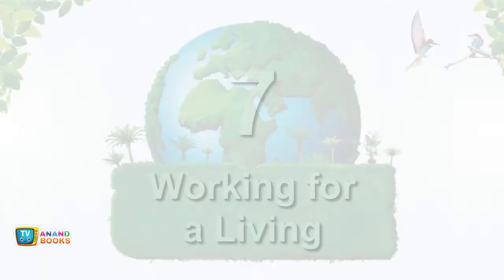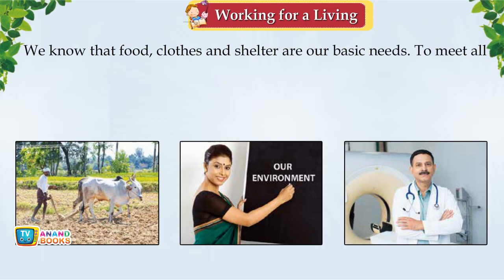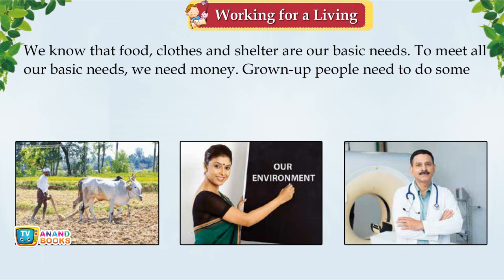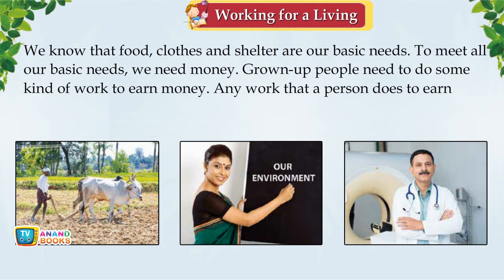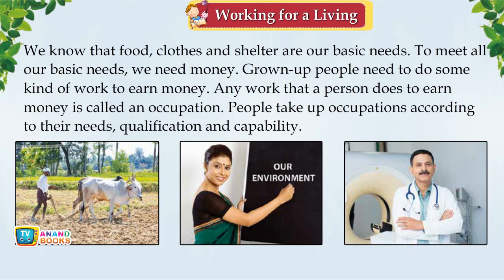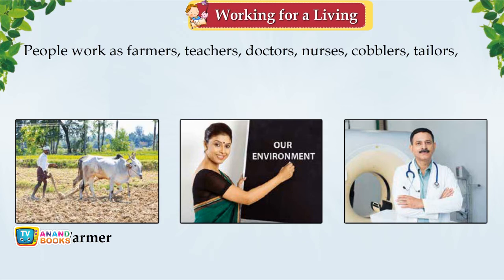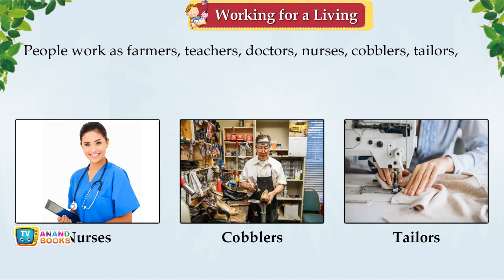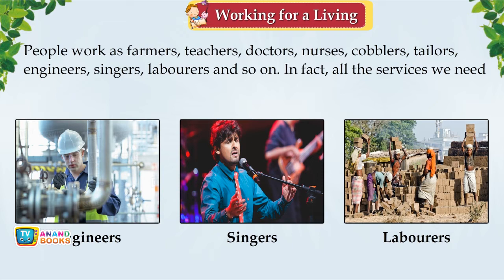Chapter 7: Working for a Living. Food, clothes and shelter are our basic needs. To meet these needs, we need money. Grown-up people need to do some kind of work to earn money. Any work a person does to earn money is called an occupation. People take up occupations according to their needs, qualification and capability — working as farmers, teachers, doctors, nurses, cobblers, tailors, engineers, singers, labourers and many others. All services we need are provided by different people, and we should respect all jobs.